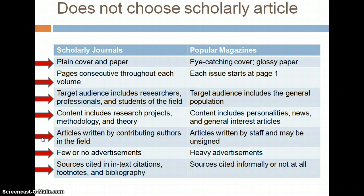In scholarly journals there are very few, if any, advertisements. Popular magazines, in contrast, are heavily advertised. Sources in scholarly journal articles are typically cited both in-text and in footnotes and the bibliography or reference page, whereas sources are very informally cited, if cited at all, in popular magazines. So you're going to want to look for some of these attributes — the bibliography, the contributing editor, the content — when you choose a scholarly article.